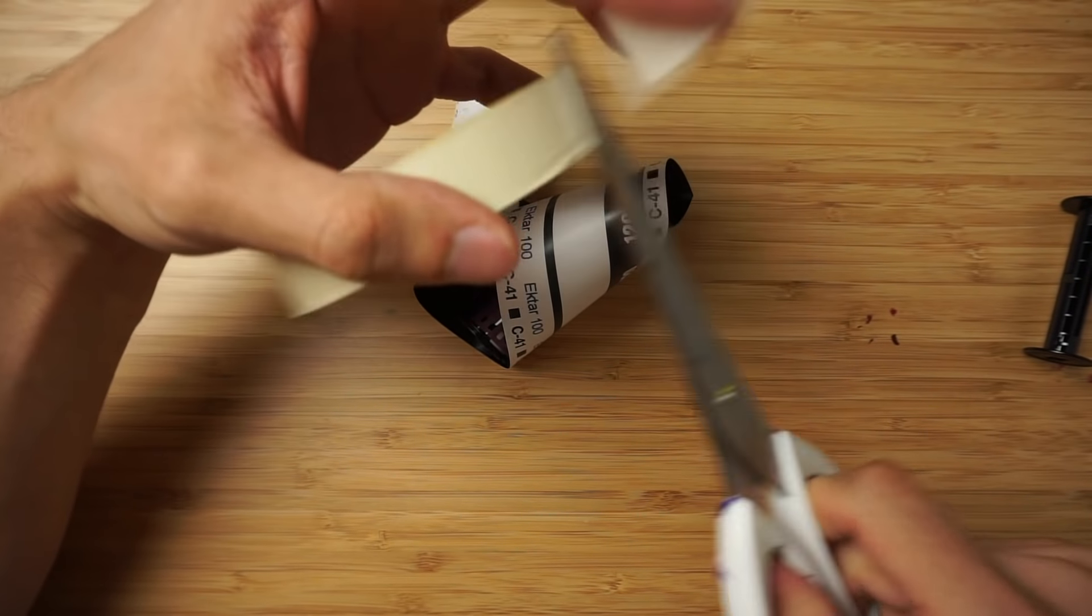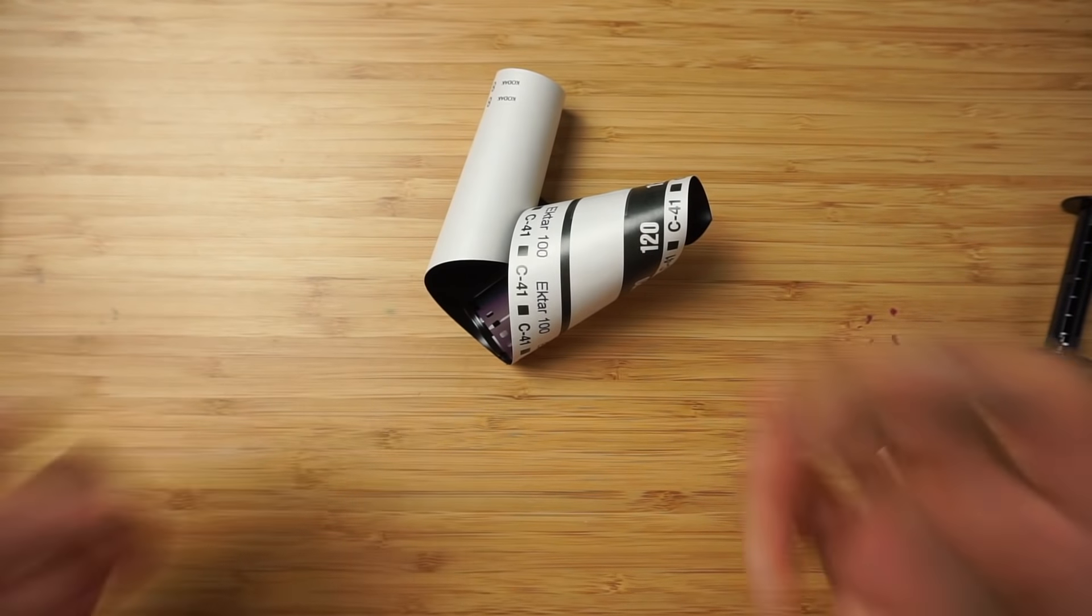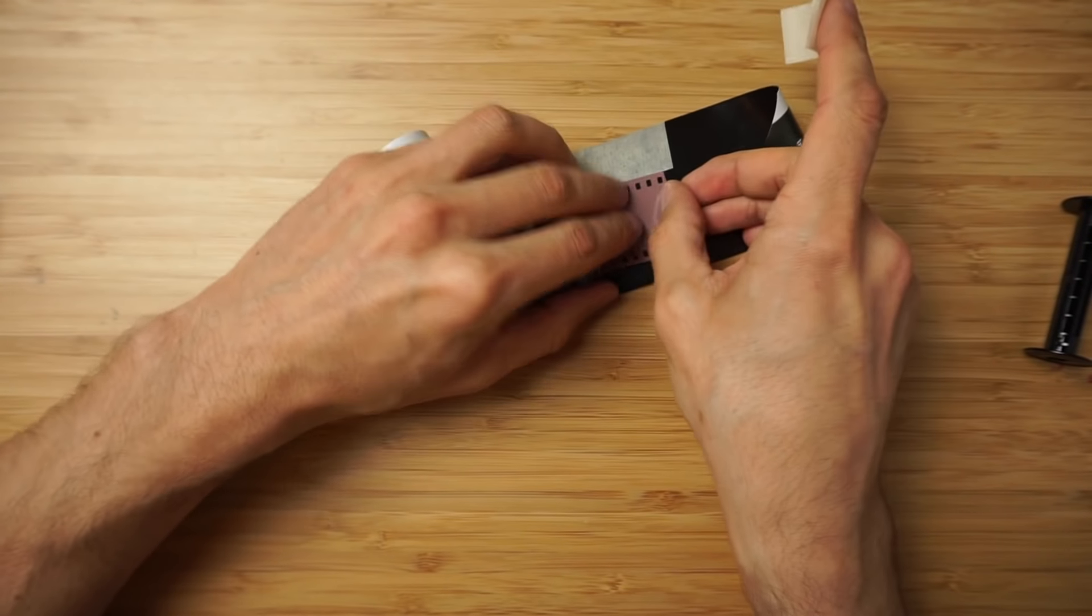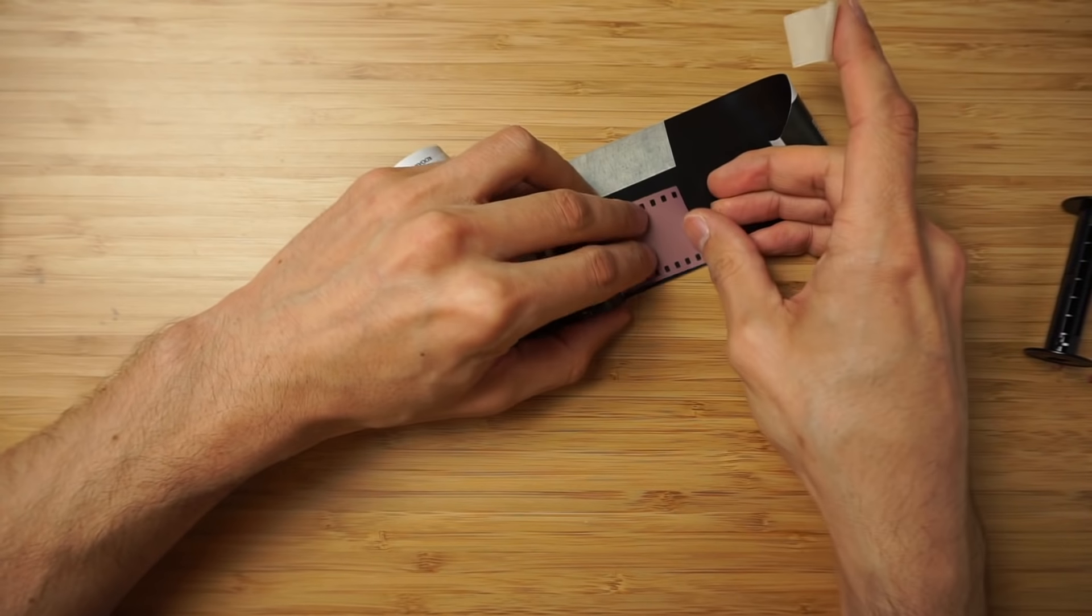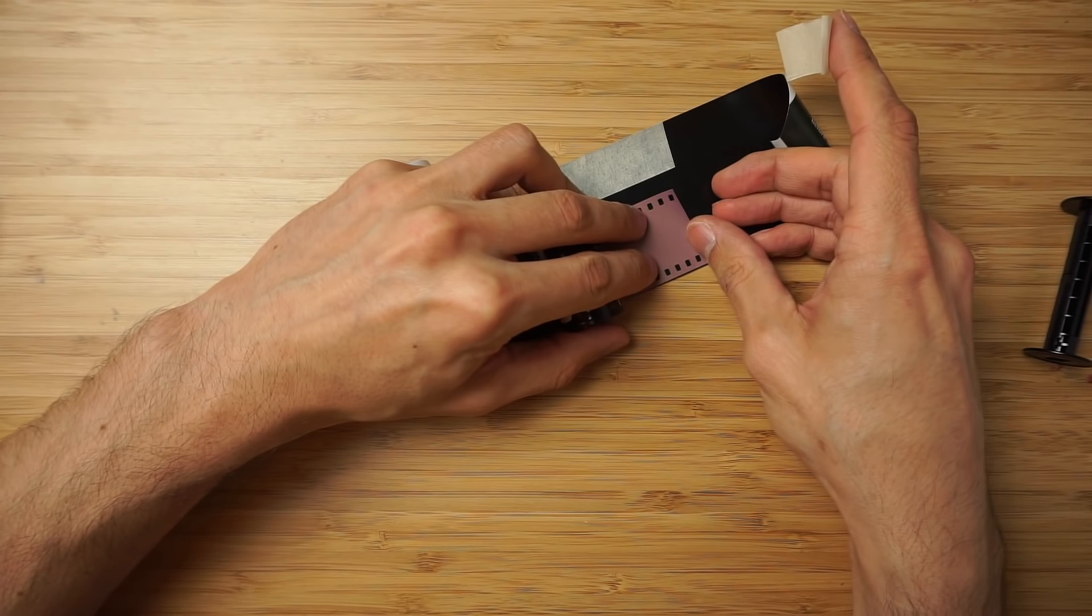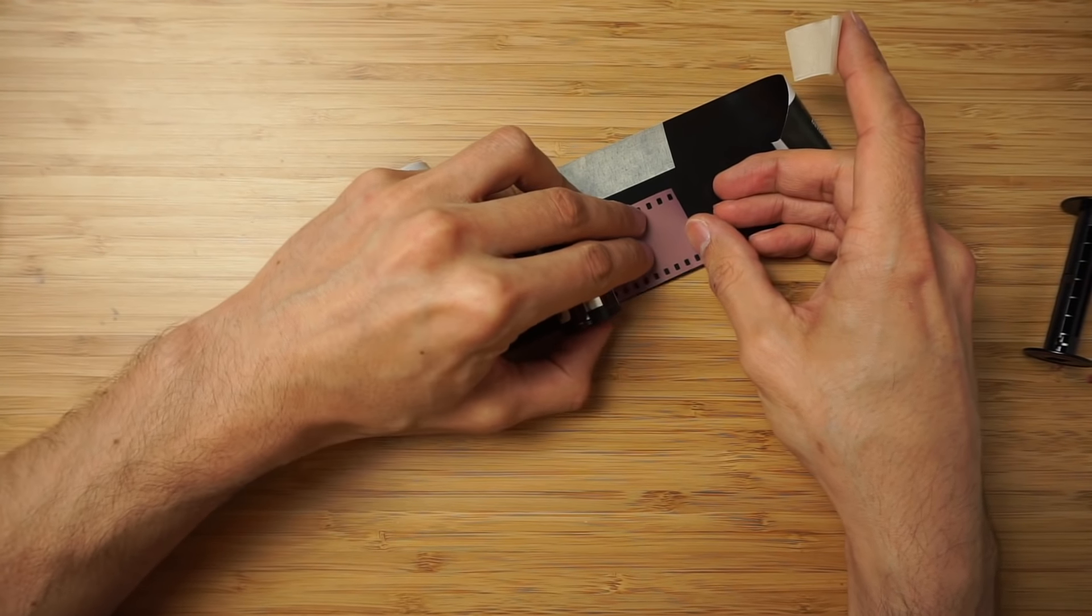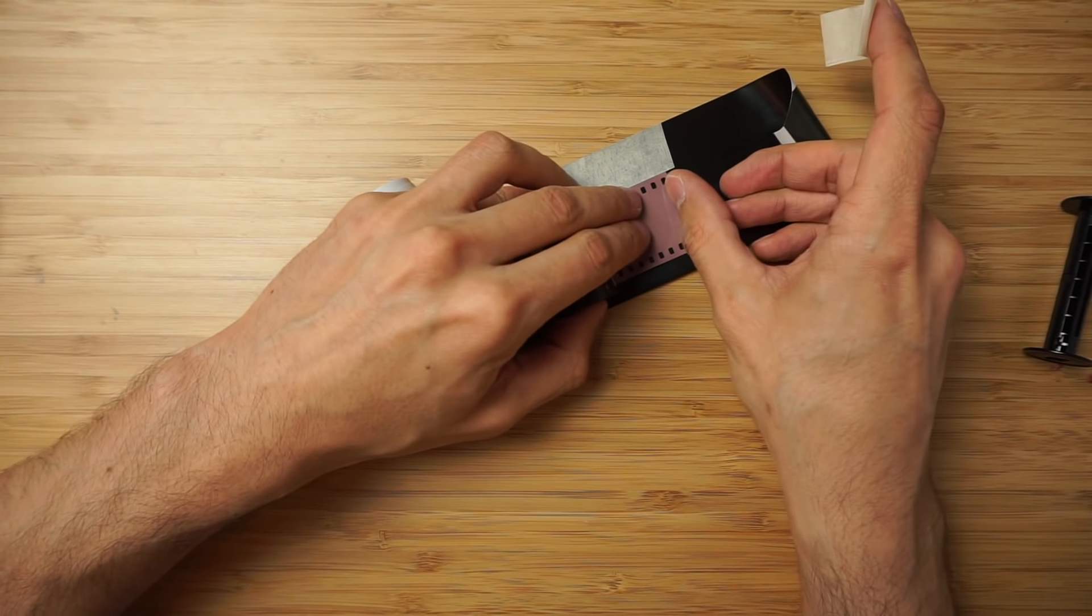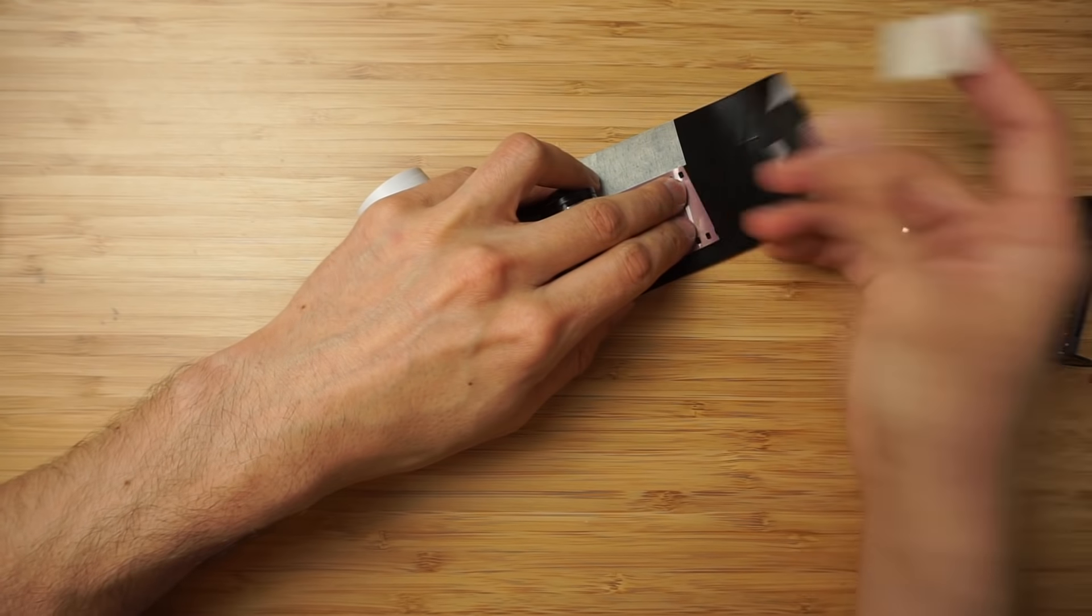The problem with my folding camera is that you can see bellows on the negatives and I didn't want to have them. Otherwise I could just put my film right here or somewhere around here and that would be maybe easier.